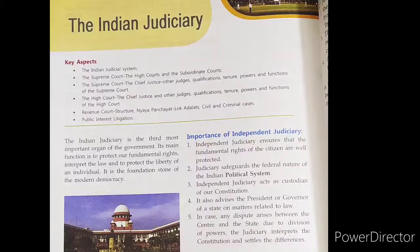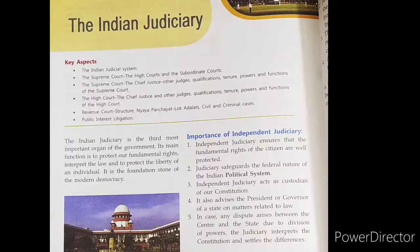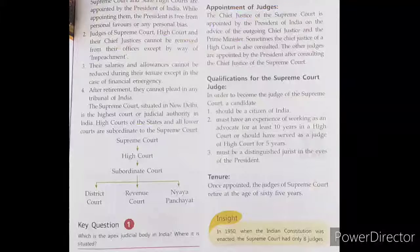The judiciary works through a network of courts. It consists of a network of judicial bodies or law courts. The Supreme Court is at the apex of the pyramid, with the High Courts below it. The High Courts in turn have subordinate district courts below them. There are 21 High Courts for 28 states and 8 union territories.